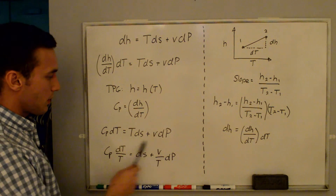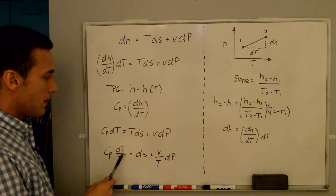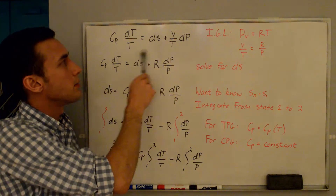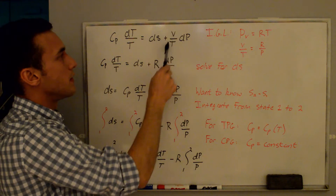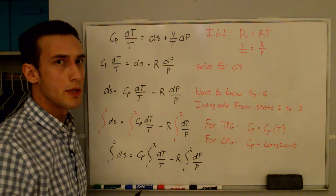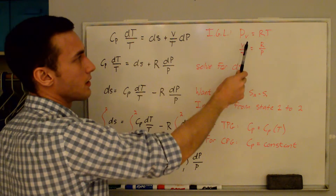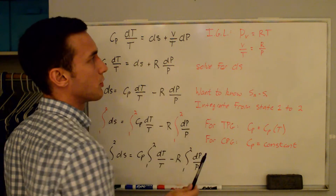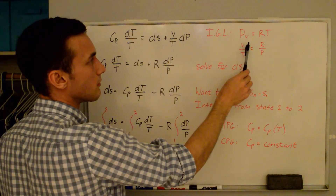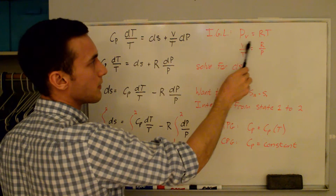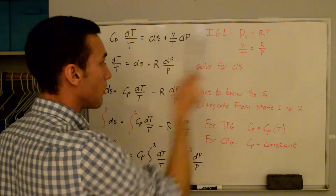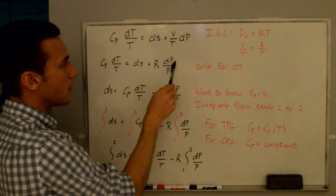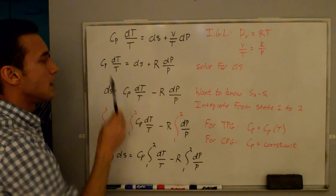If we divide this whole expression by temperature, we get cp times dT/T equals ds plus v/T times dp. I want to get rid of this v/T term, so I'll use the ideal gas law: pv equals RT, where v is specific volume and R is the specific gas constant. Solving for v/T gives R/p, and plugging that in we get cp·dT/T equals ds plus R·dp/p.